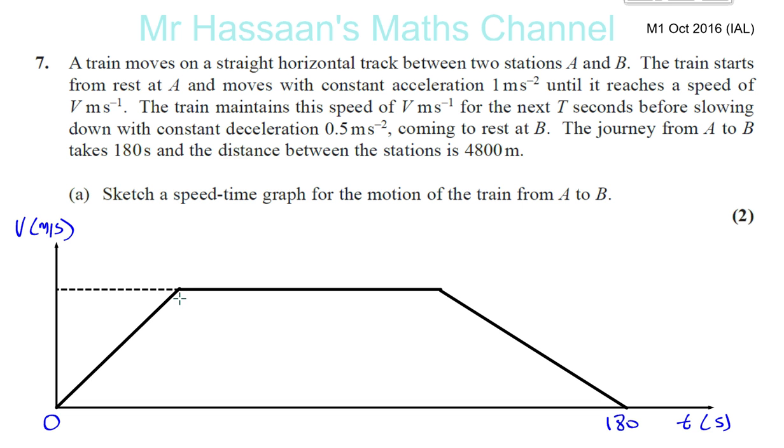It reaches a speed of V m per second and it does that in, well, we don't know how many seconds. Then it goes for T seconds at constant speed until it reaches zero at 180. So this is like X seconds, we don't know. And this is T seconds after X. So that's X plus T seconds. And that's 180 seconds. And that's V m per second. We know the gradient of this is 1. So in terms of V, this would be equal to V. This would be V plus T because the gradient is 1. So V over X equals 1.